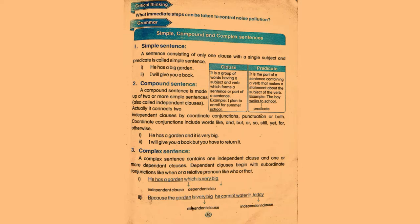The dependent clause can come first or last. 'Because the garden is very big' is the dependent clause, and 'he cannot water it today' is the independent clause.